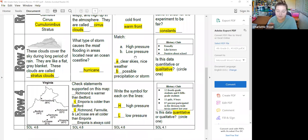High pressure means we're going to have clear skies, nice weather. So we like high pressure. And low pressure means that there's rain or storm possibly coming.